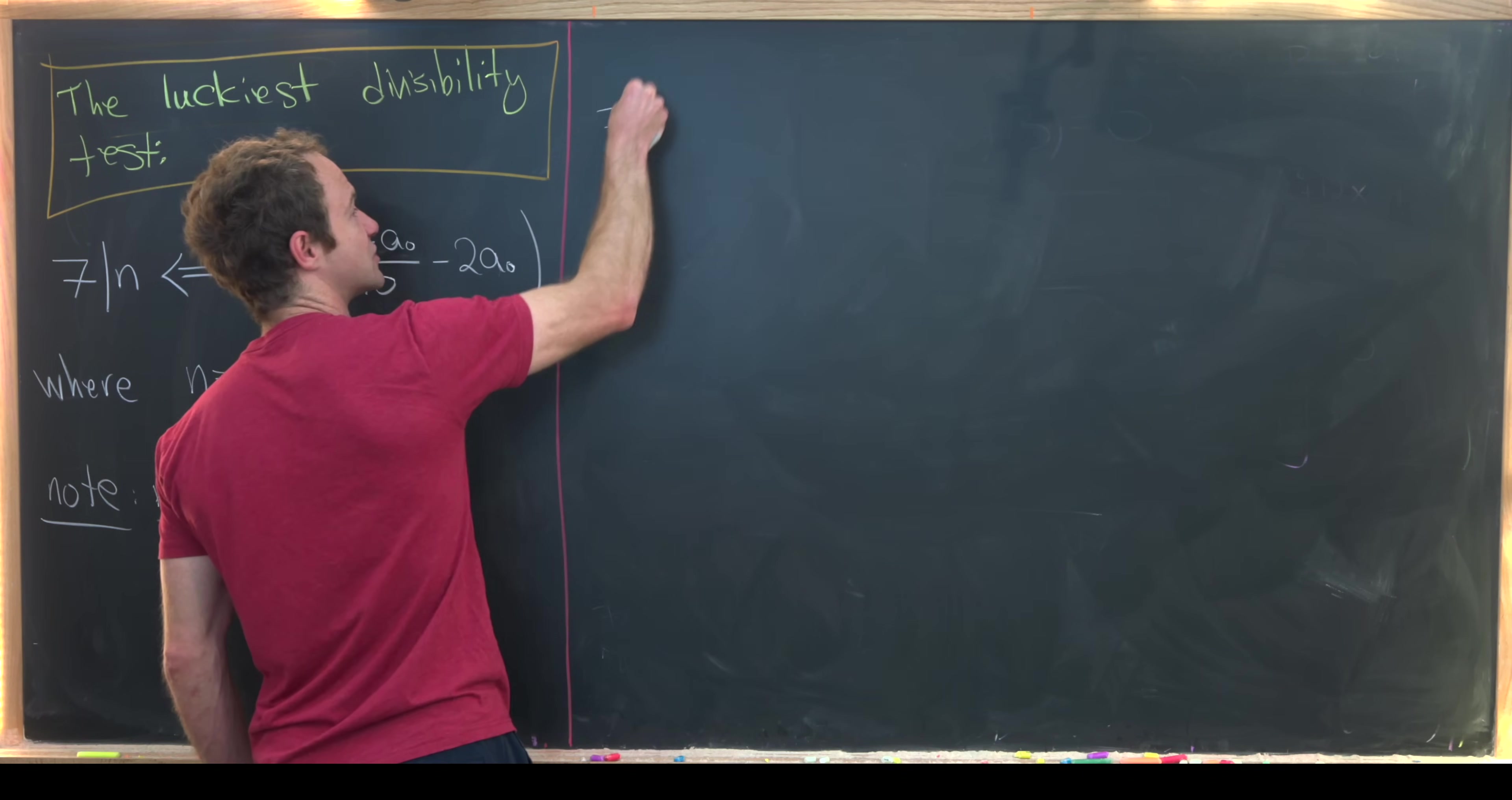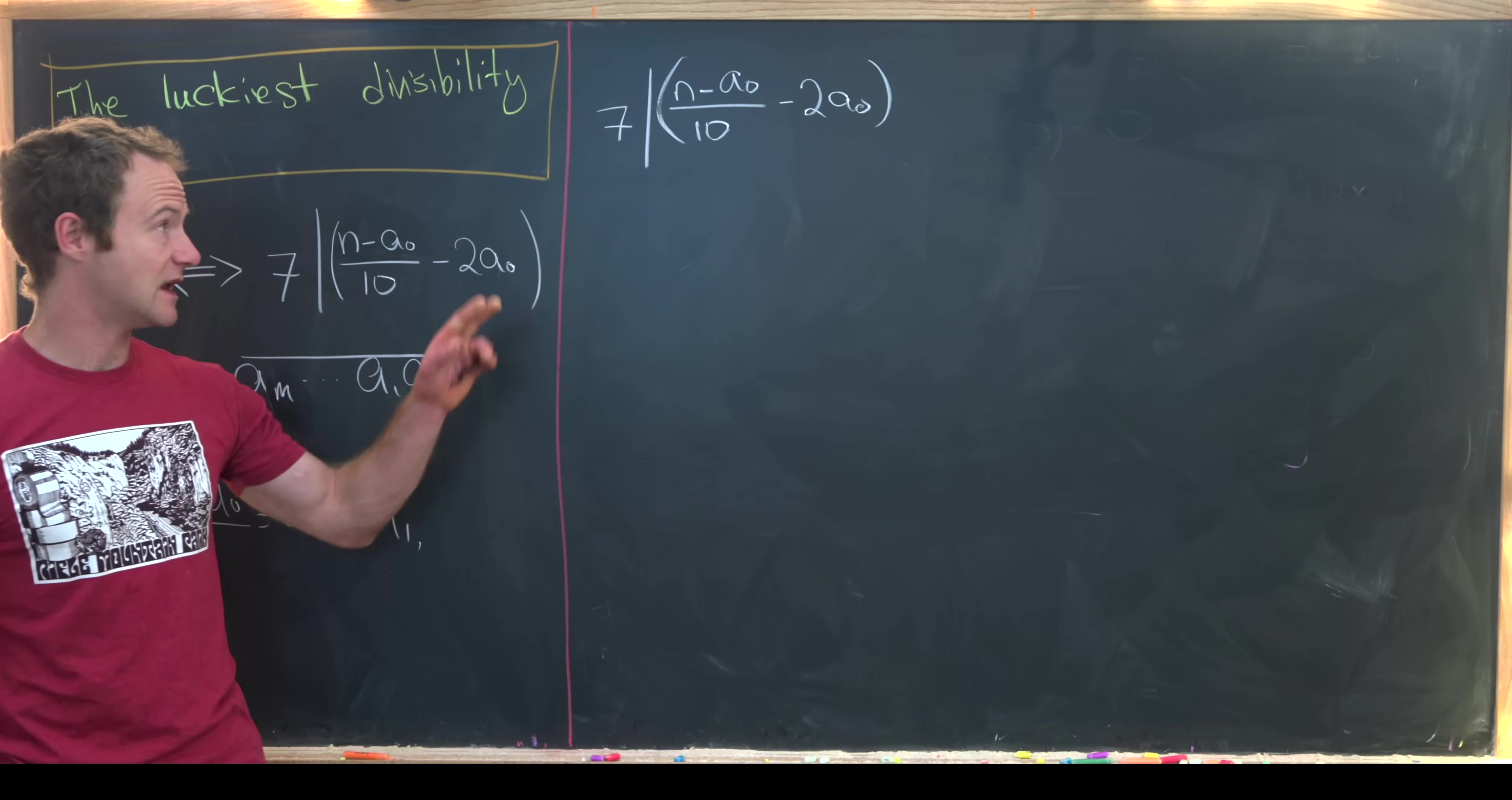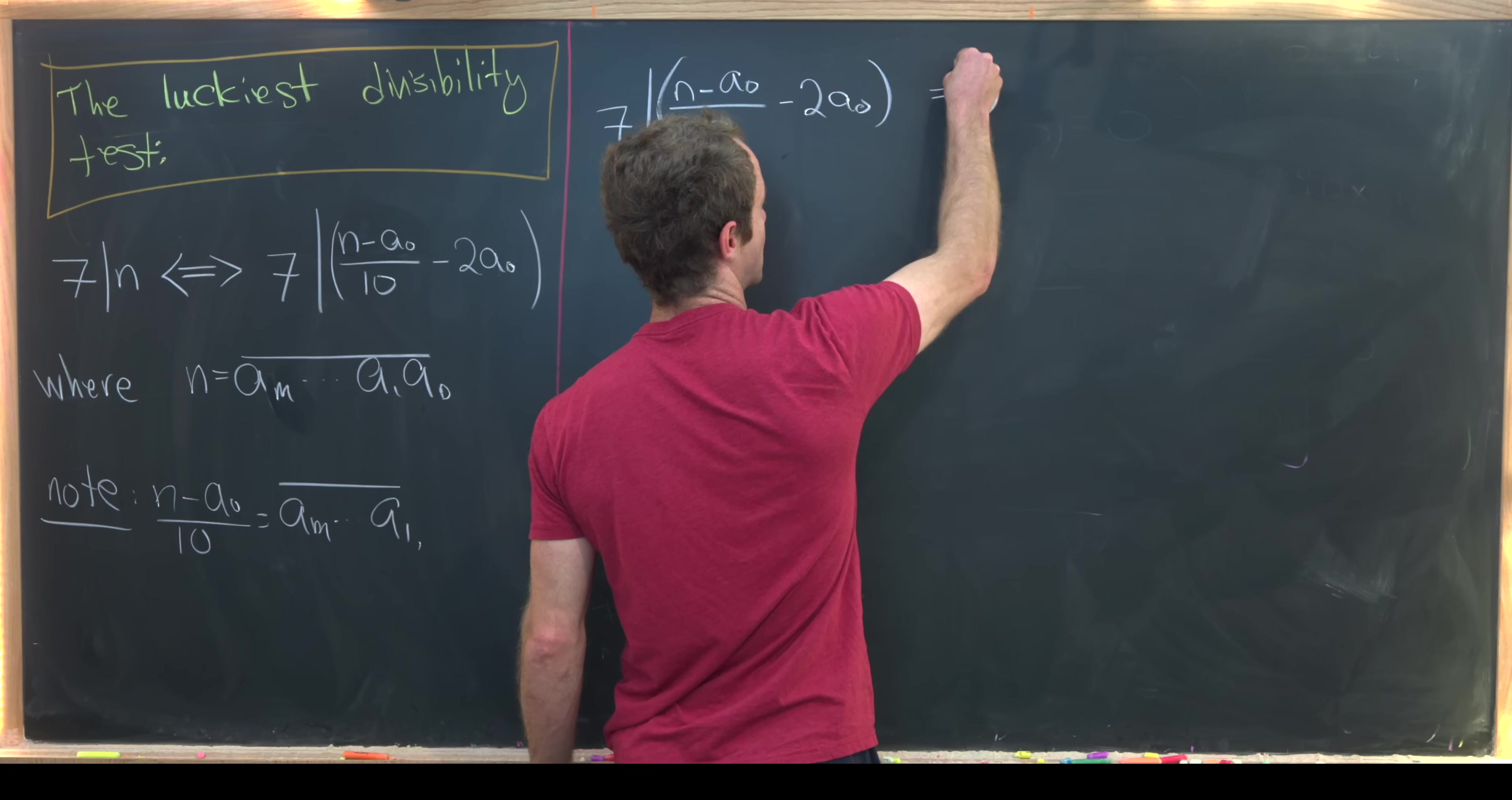So let's first start by noticing that if seven divides (n - a_0)/10 - 2a_0, then seven also divides 10 times this. And that's actually an if and only if statement because 10 and seven are relatively prime.